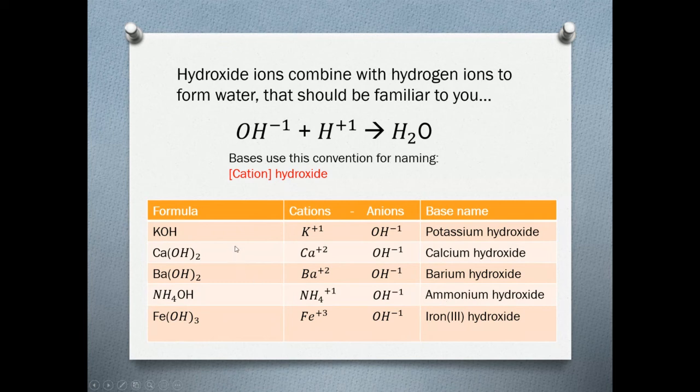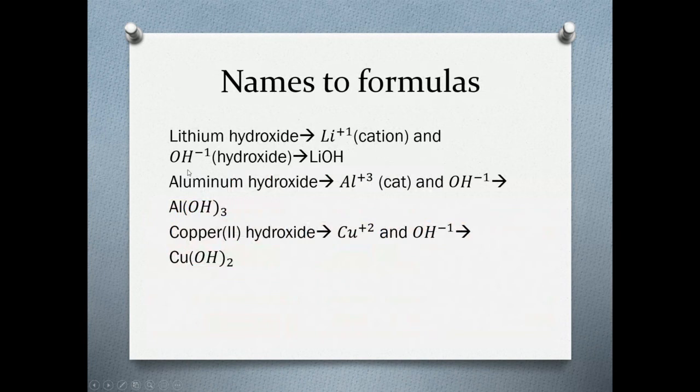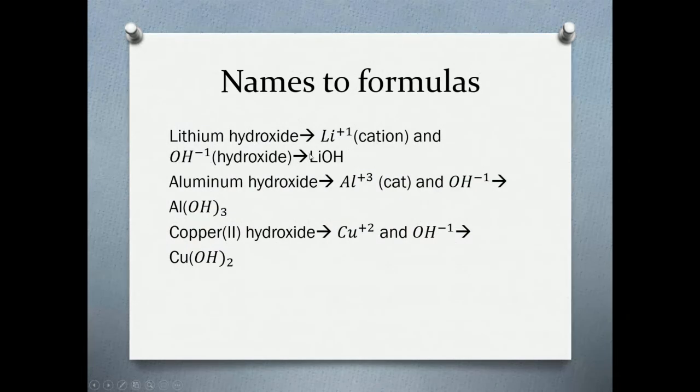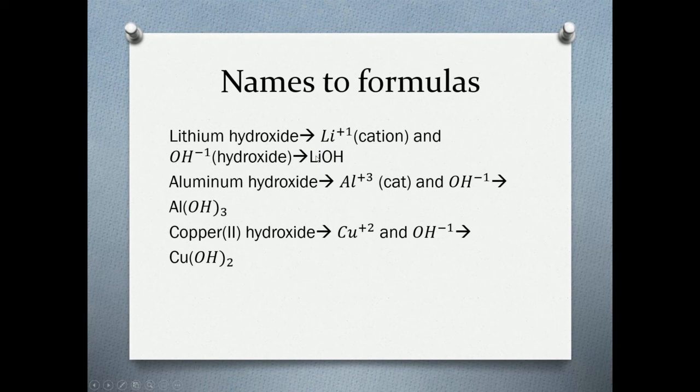Going from names to formulas. Here we have the lithium cation and the hydroxide anion. We write them, we do our crisscross applesauce, reduce to the most common denominator, and that gives us LiOH, which is lithium hydroxide. Two cation, one negative anion, crisscross applesauce. Remember to put your parentheses around here because this is a polyatomic ion and it requires parentheses to indicate that. And we get Al(OH)3, aluminum hydroxide.